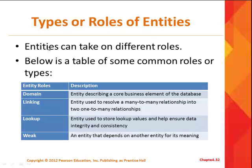There are types of entities — an entity can take on different roles. A domain entity describes a core business element. In the previous example, a magazine and a subscriber were core business elements — domain entities. Most entities are domain entities, like an employee, an order, a customer, or a student. The linking entity is one you just saw — it's created to break up a many-to-many relationship, and there could be a few linking entities in your database.